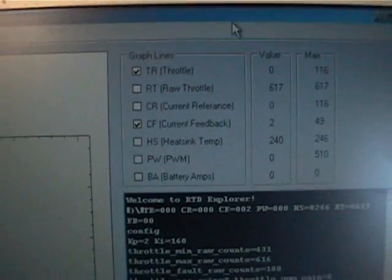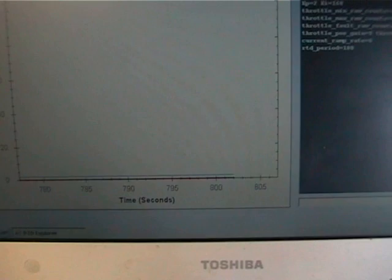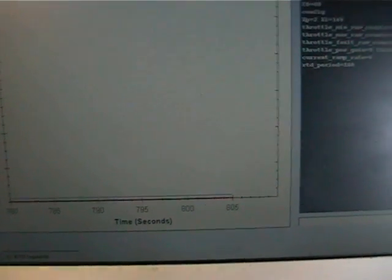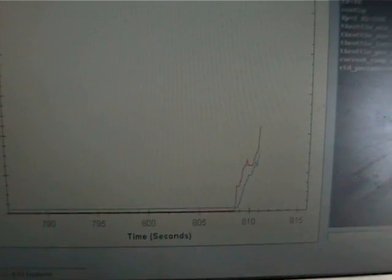I've just got two values ticked here now. We've got the throttle and we have the current feedback. Now the throttle is in red and the current feedback is in blue. If I advance here I should be able to see the throttle increase.